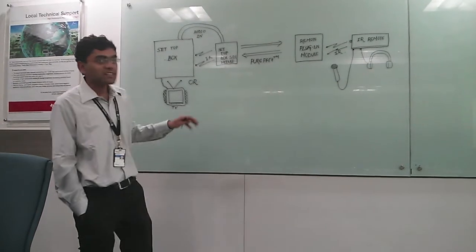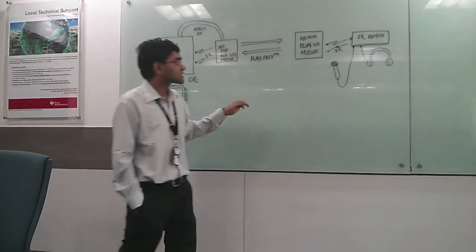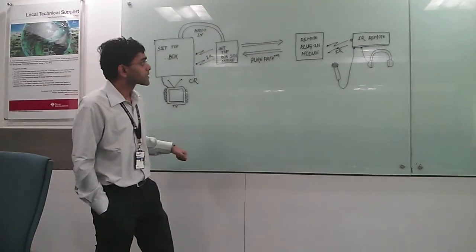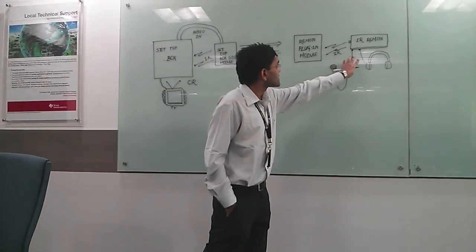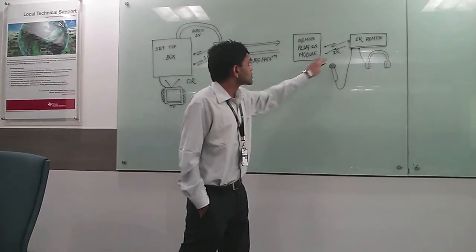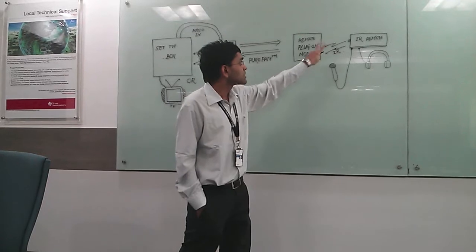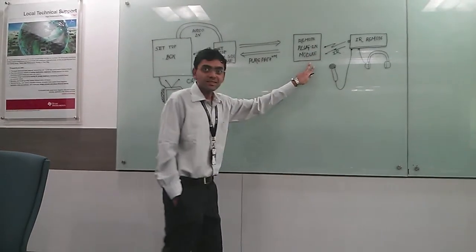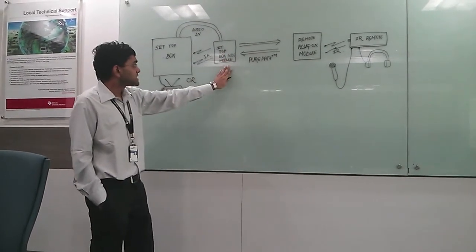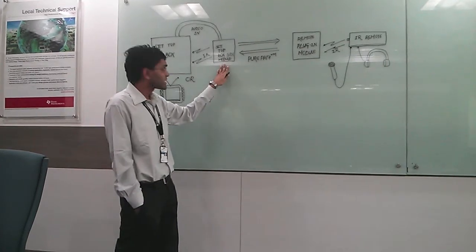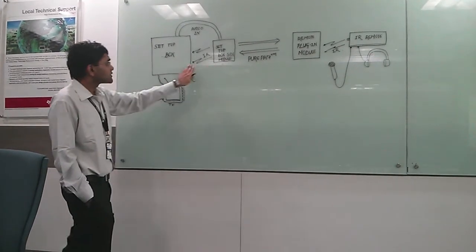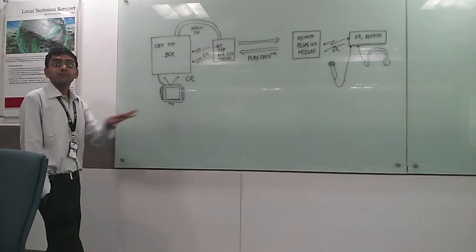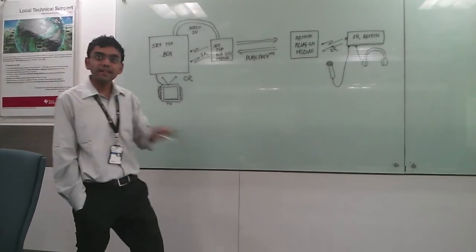I will briefly explain the functioning of this reference design through this block diagram. First, we emit the IR signals from the remote to a dongle which is attached to the remote. This dongle converts the signal into RF signals received by our module on the set-top box side, which is back converted into IR and recognizable by any set-top box of any company in the world.